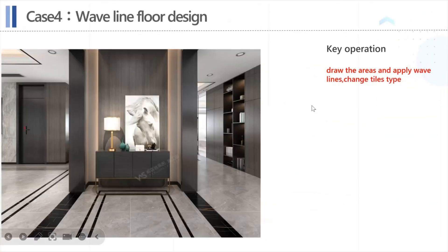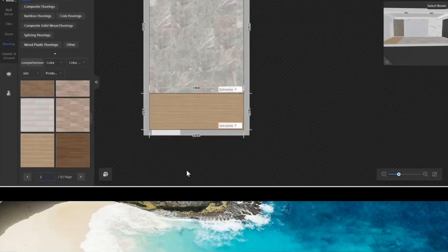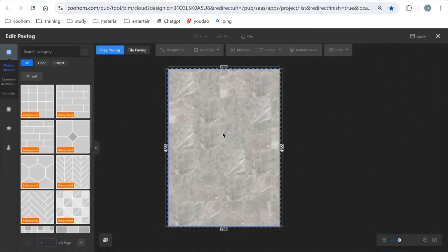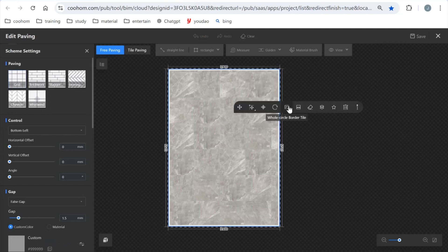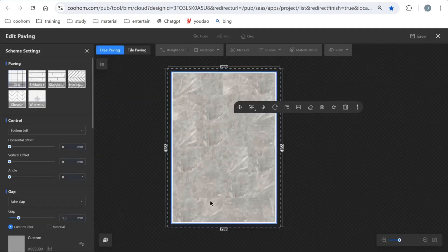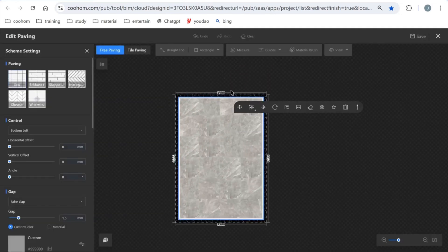That's for that case. Let's see the next case, which has a wavy border on the floor. We can see these are border tiles on the floor. There is a feature in our paving edit — if you want to create a complicated paving method, you need to go into the paving edit. It's very important. Choose this area and click add paving. You'll see a whole circle border tile — click it and click confirm.